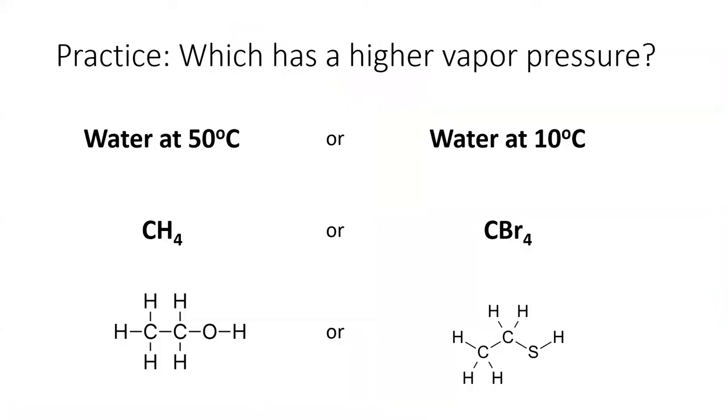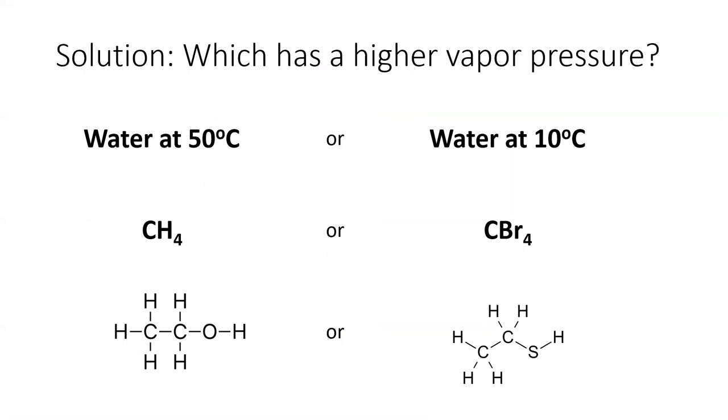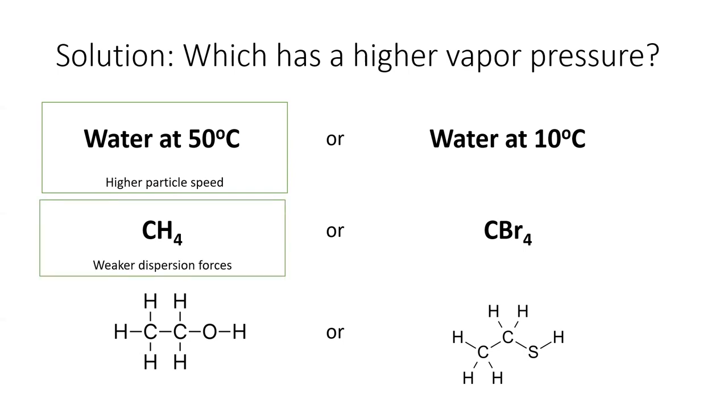Time for a practice problem. Which substance has the higher vapor pressure? Remember that high vapor pressure corresponds to fast particle speeds and or weak IMFs. Water at a higher temperature will have faster particle speeds, which will more easily escape into the vapor phase and give it a higher vapor pressure. Methane has a smaller molar mass than carbon tetrabromide and therefore weaker dispersion forces. It more easily vaporizes and has a higher vapor pressure. The molecule on the left can hydrogen bond, which is one of the strongest IMFs. The molecule on the right cannot and will have less holding it onto the liquid phase. The molecule on the right will have a higher vapor pressure.